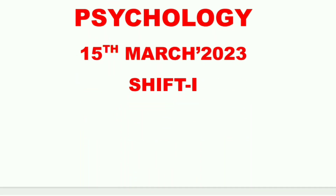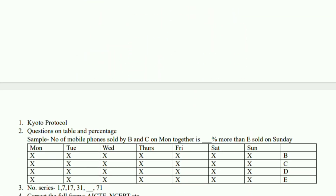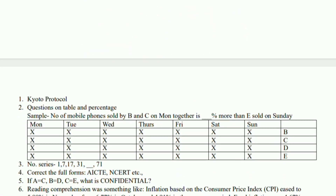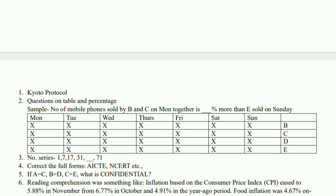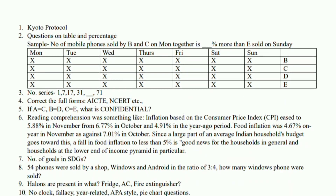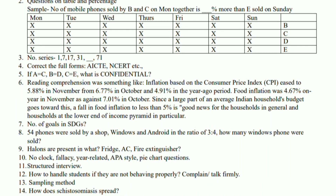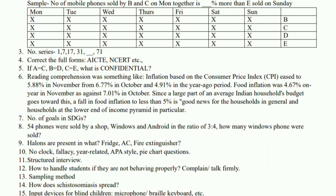Hello guys, these were the questions that were asked during shift 1 on 15th March. The first question itself was the purpose of the Q2 protocol. Then there were many questions regarding reading the table and finding out the percentage of number of mobile phones stored by A and B, and what is the percentage, what is the difference, and all that.